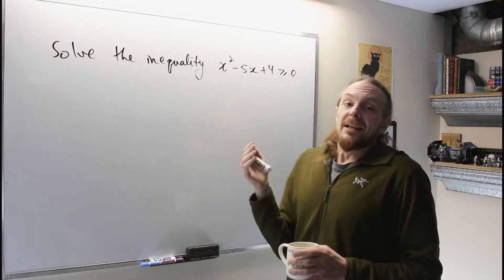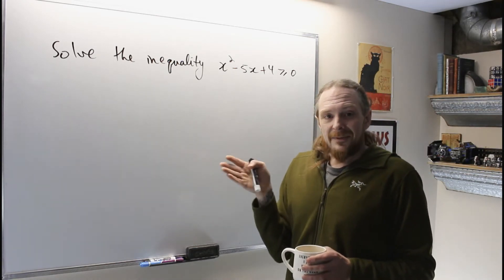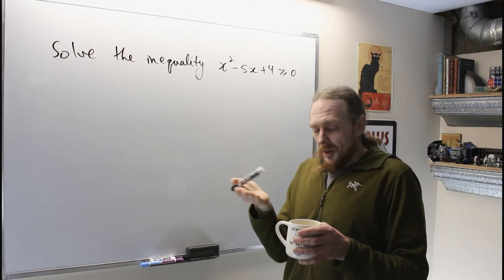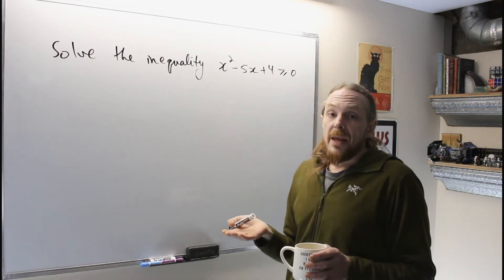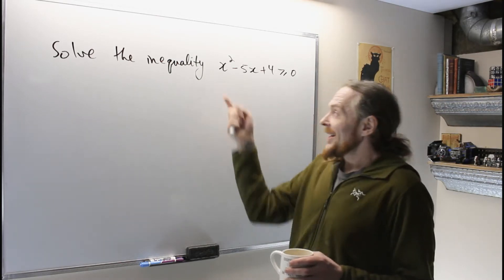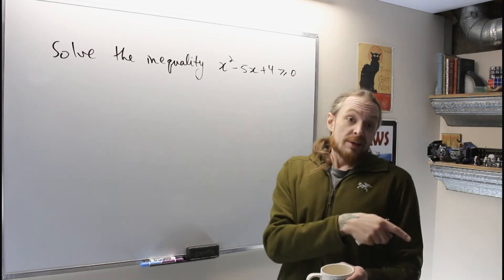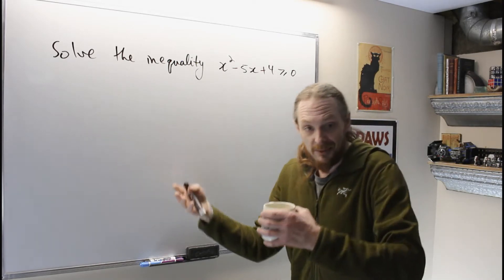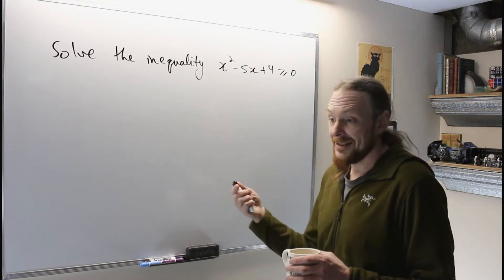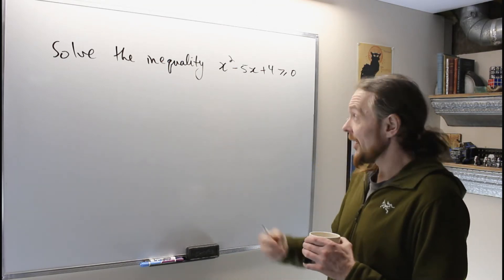So the idea is linear inequalities are fairly easy to solve. The strategy is we break the nonlinear guy into a bunch of linear parts, solve all those linear inequalities, and then multiply them together to get the nonlinear guy. So that's the overall strategy. So here we go.